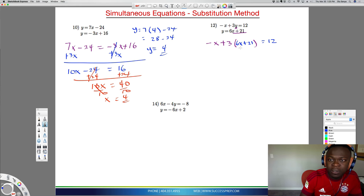This is going to be minus x plus 3 times 6 is 18x, and then 3 times 21 is 63, and that equals 12. If you combine minus x plus 18x, you're going to get 17x plus 63 equal to 12. You want to get rid of the 63, so it would be minus 63 on both sides. This goes away. You're going to get 12 minus 63, which is minus 51. So this is 17x equals minus 51.